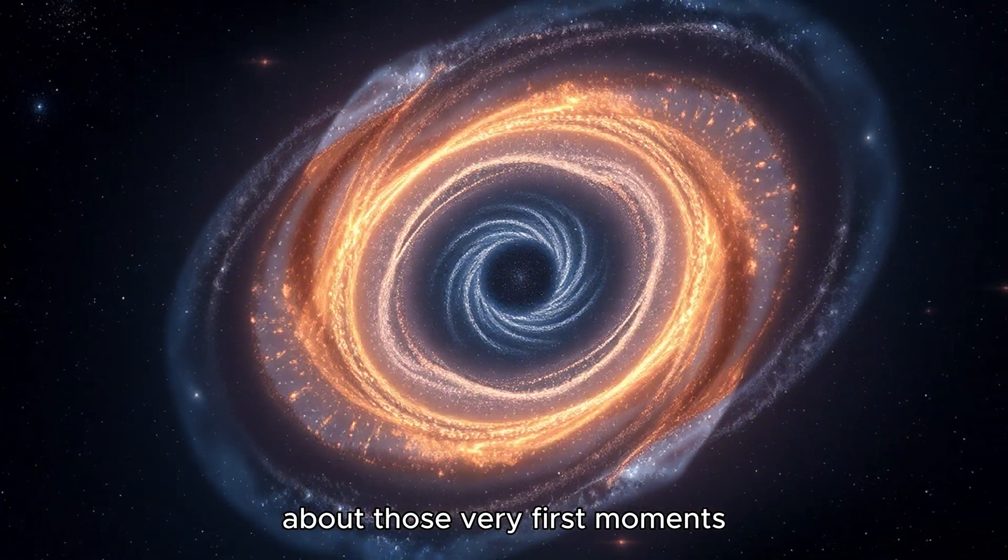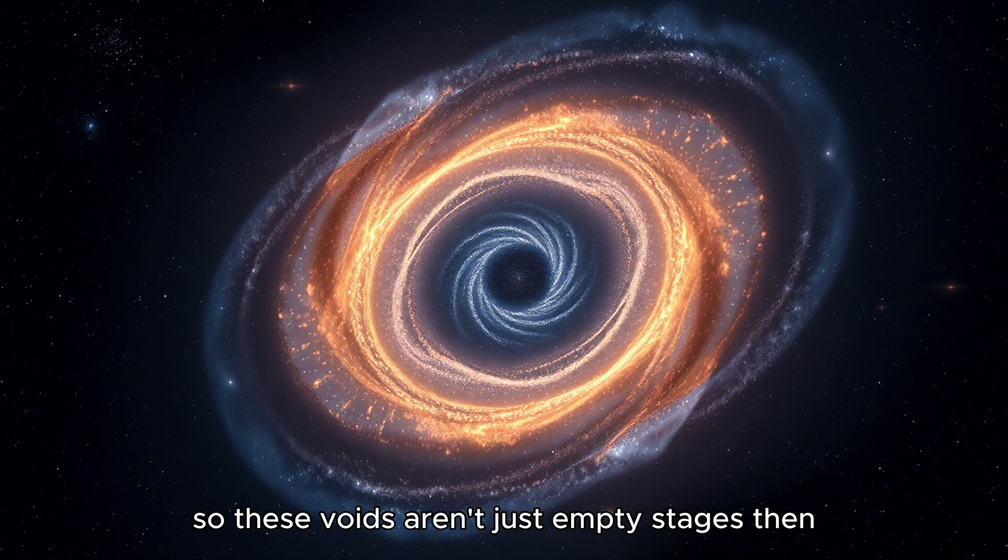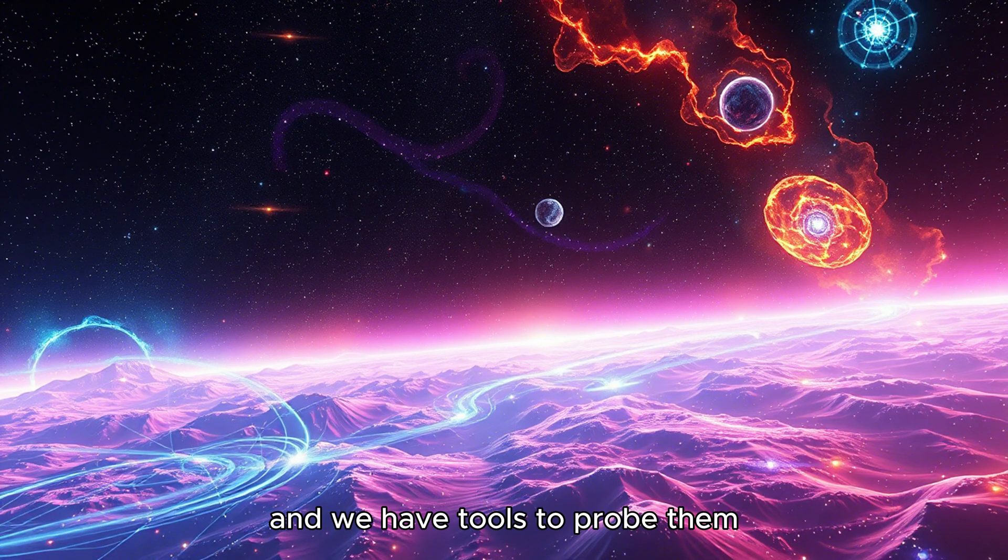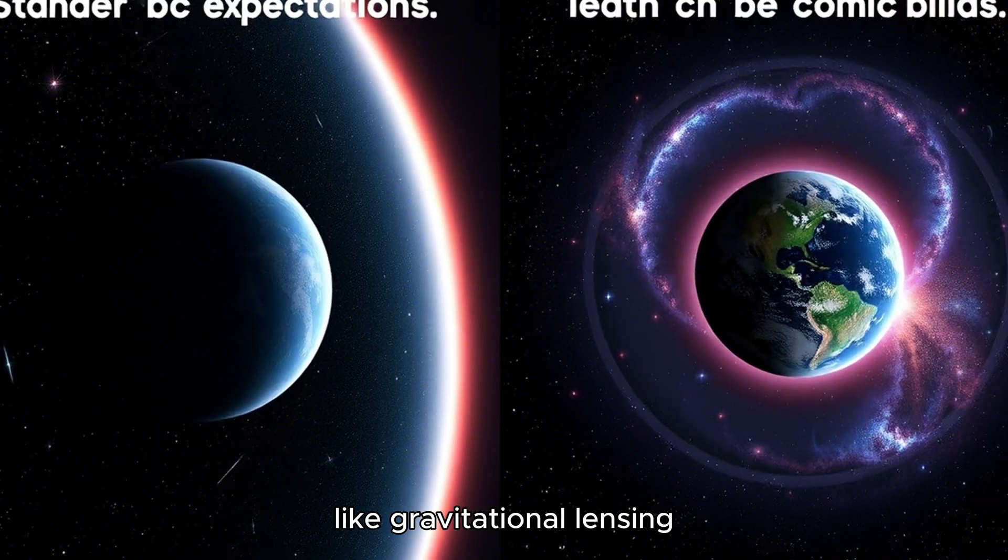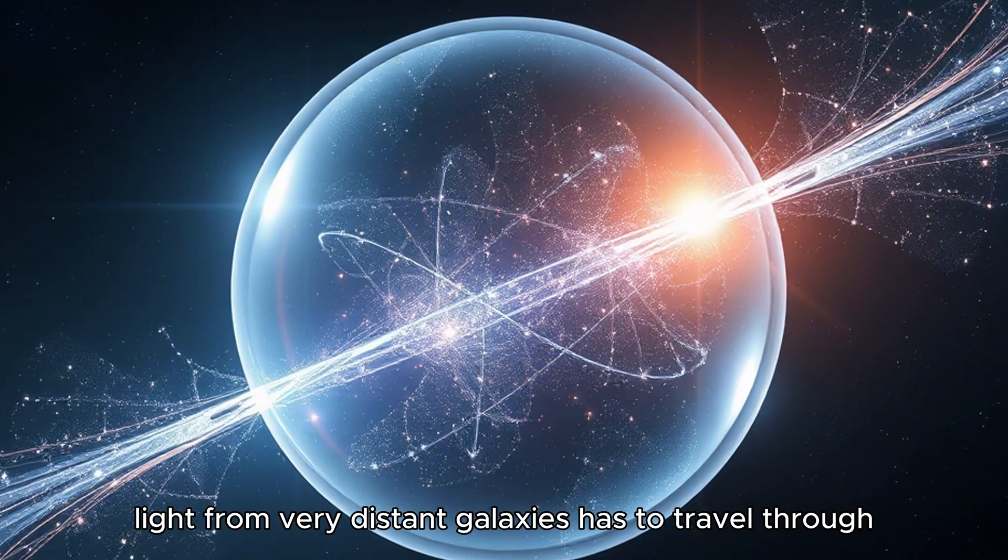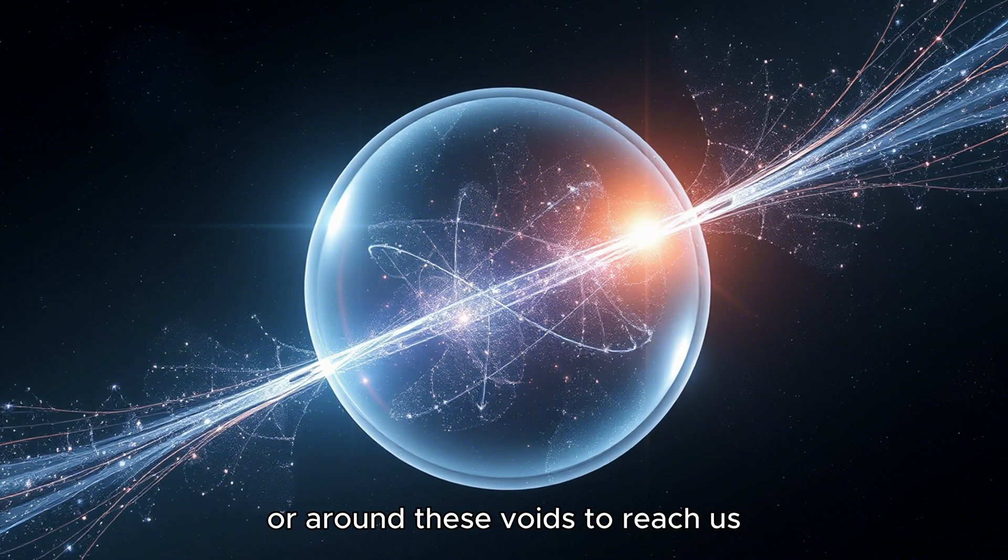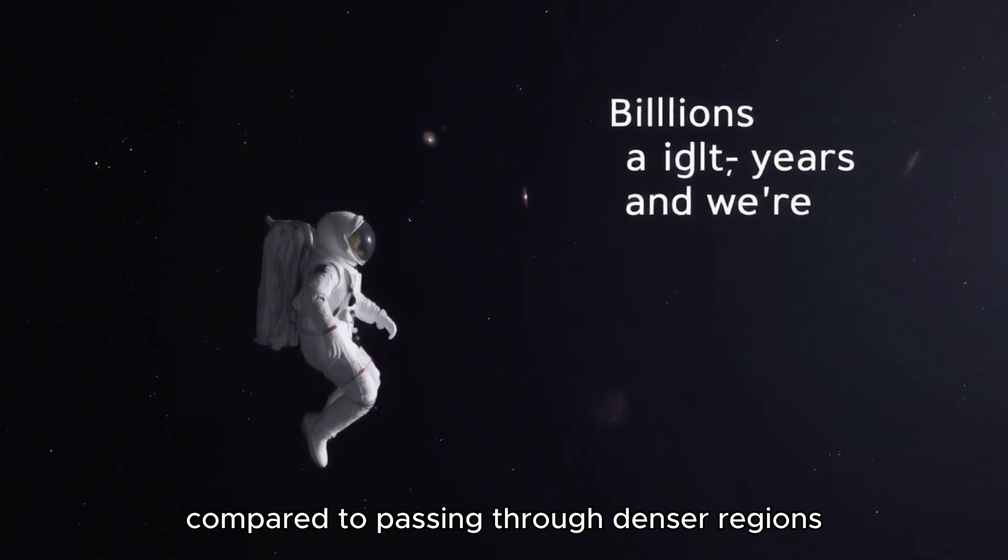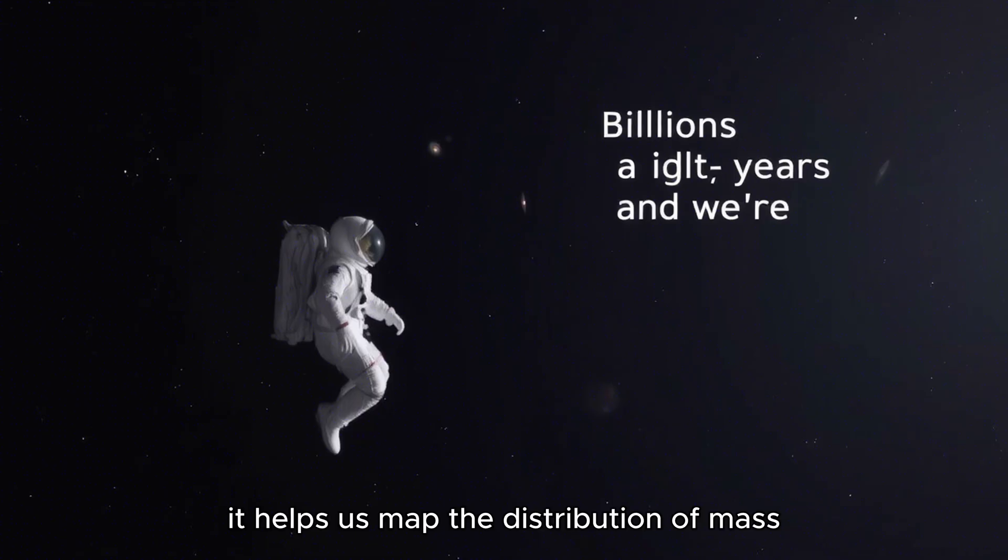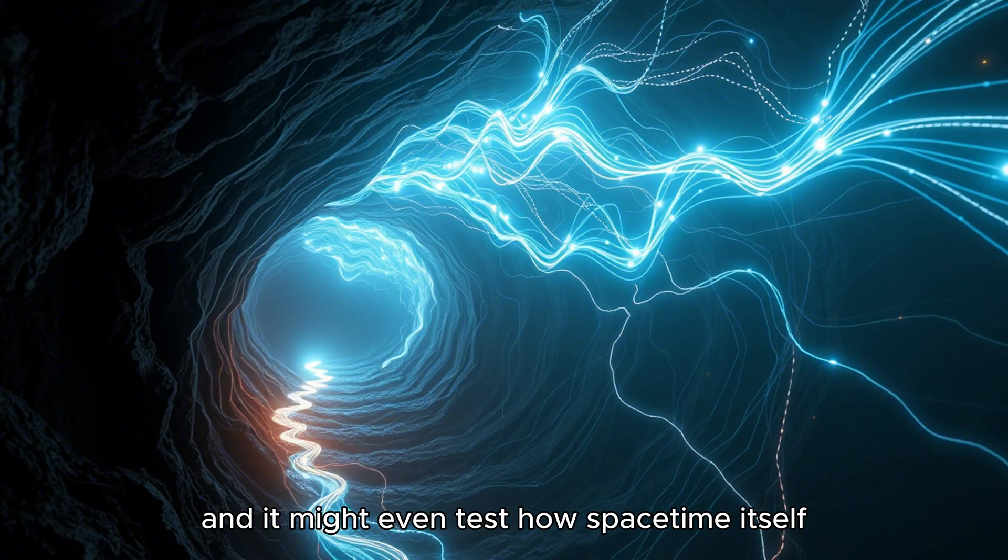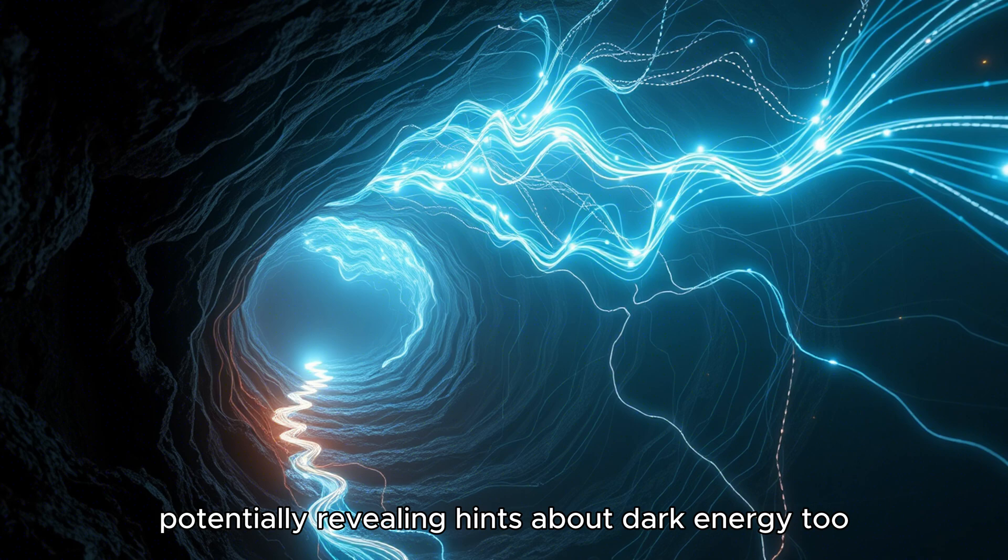So these voids aren't just empty stages, then. They're active players, or at least unique environments for studying the universe. Absolutely. They're unique natural laboratories. And we have tools to probe them, like gravitational lensing. Light bending around massive objects. But how does that work for empty space? Well, light from very distant galaxies has to travel through or around these voids to reach us. The way its path is bent, or perhaps less bent than expected compared to passing through denser regions, can give us clues. It helps us map the distribution of mass, including dark matter, both inside and around the voids. And it might even test how spacetime itself is structured in these low-density regions, potentially revealing hints about dark energy, too.